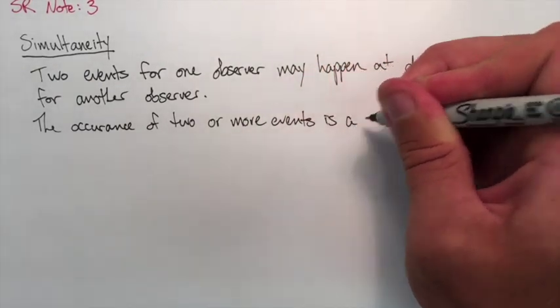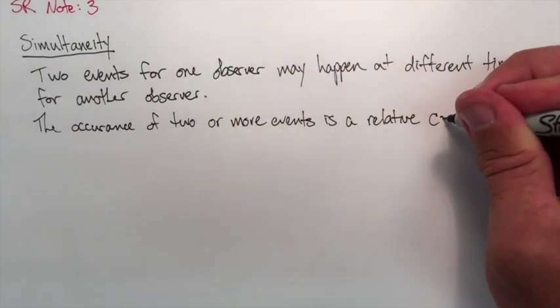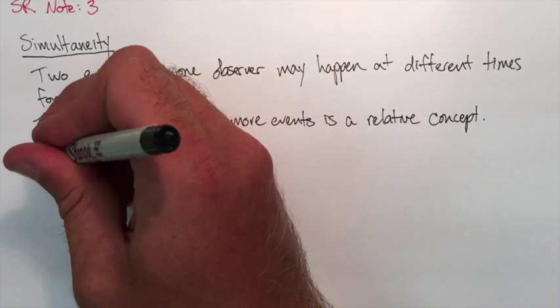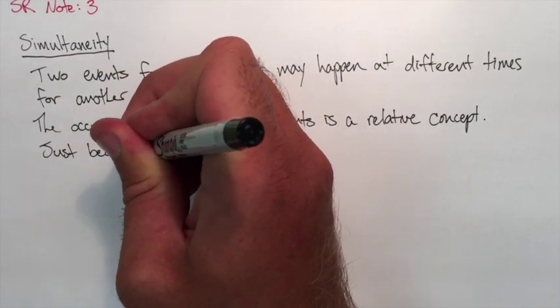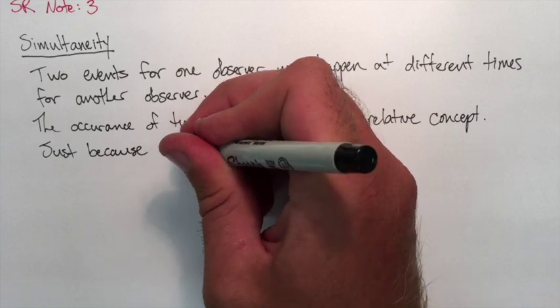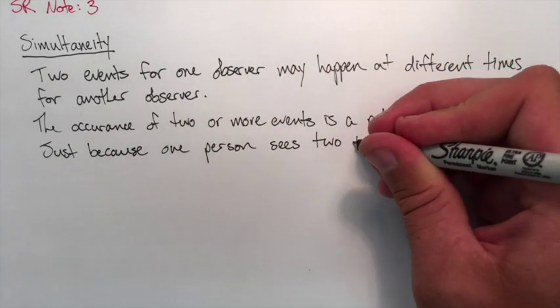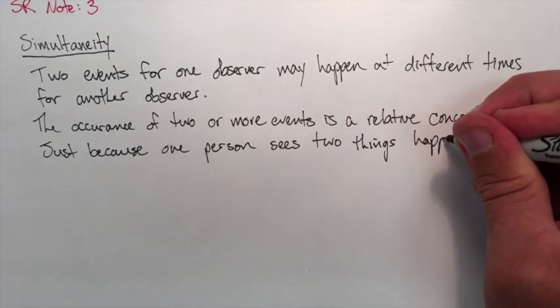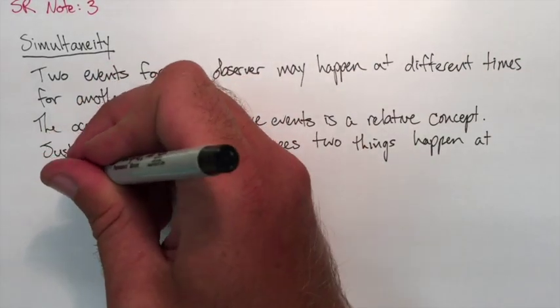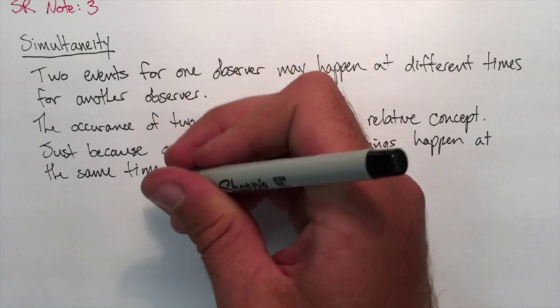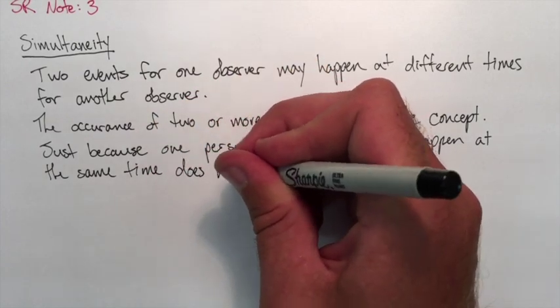When two events happen, it doesn't necessarily mean that they happen at the same time for one person versus another. Just because one person sees two things happen at the same time doesn't actually mean they happened at the same time. So this brings us to Einstein's gedanken experiment.